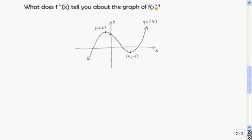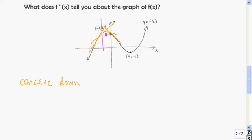Now let's take a look at what f double prime tells us about the graph of f of x. First I want to define concave up and concave down. Looking at this part of the graph — I'm telling you this part is concave down. I'm going to draw tangent lines to the graph for these values of x. In all these cases, the graph of the tangent line lies above the graph of the function. If the graph of the tangent line lies above the graph of f of x, that means the function is concave down there.